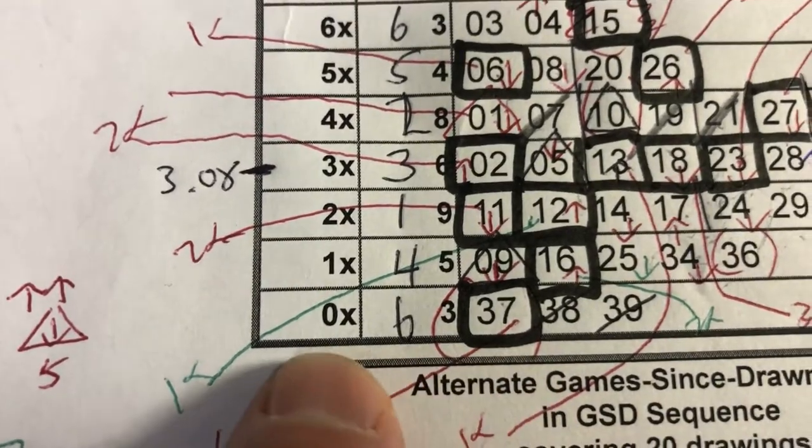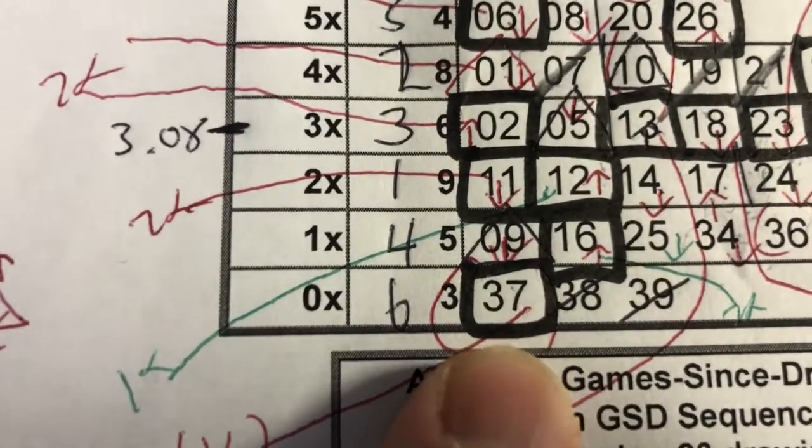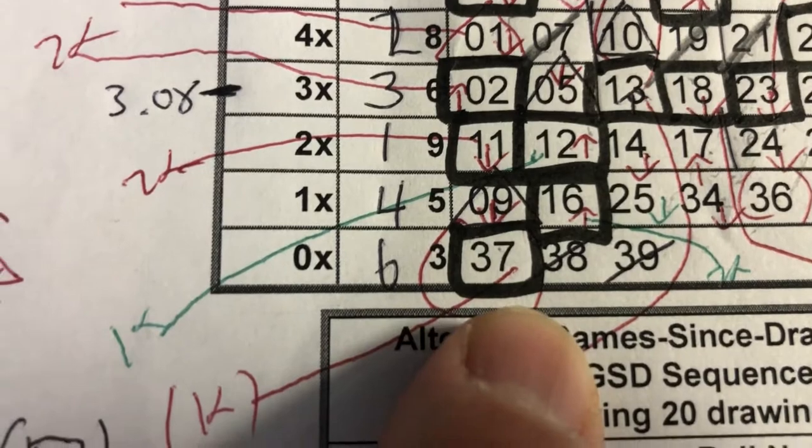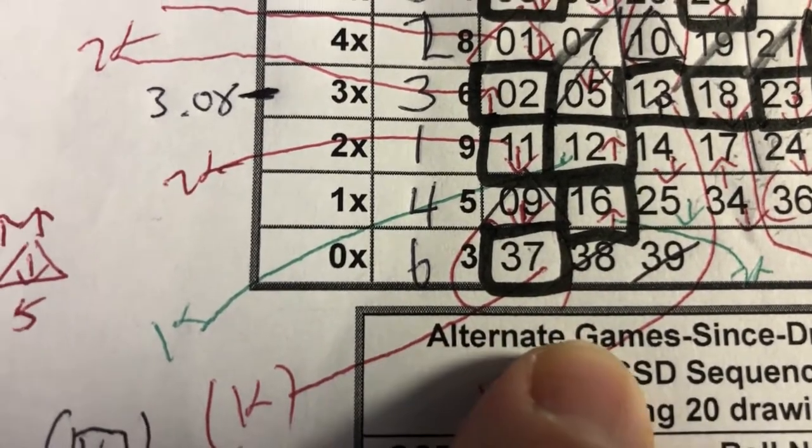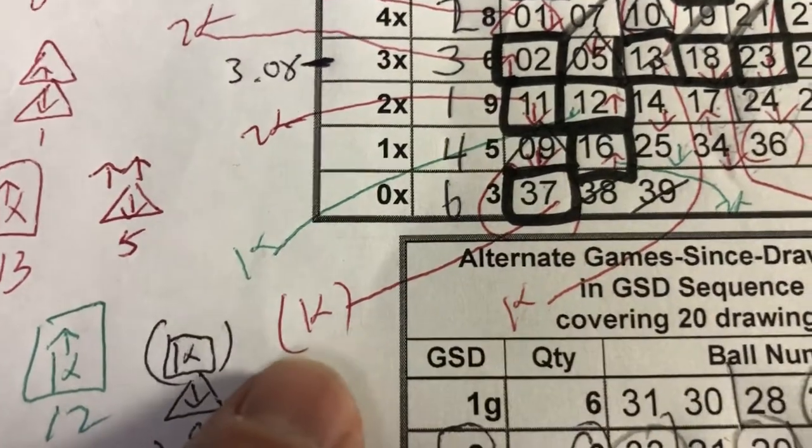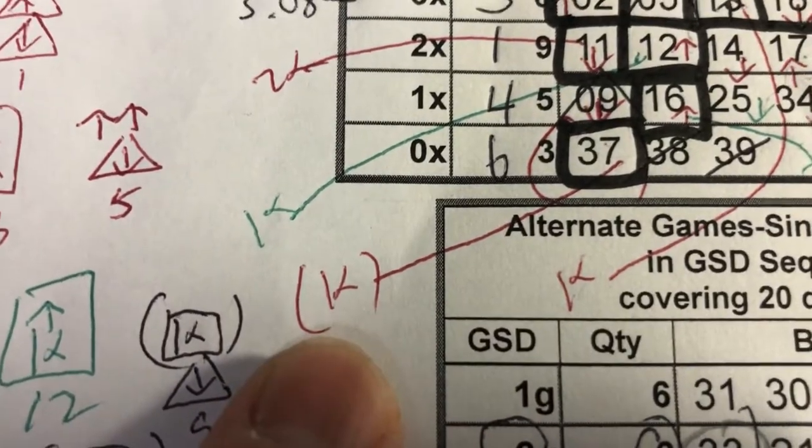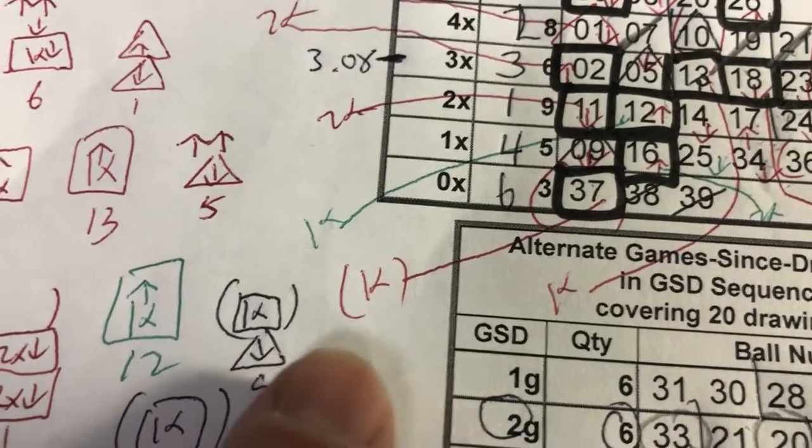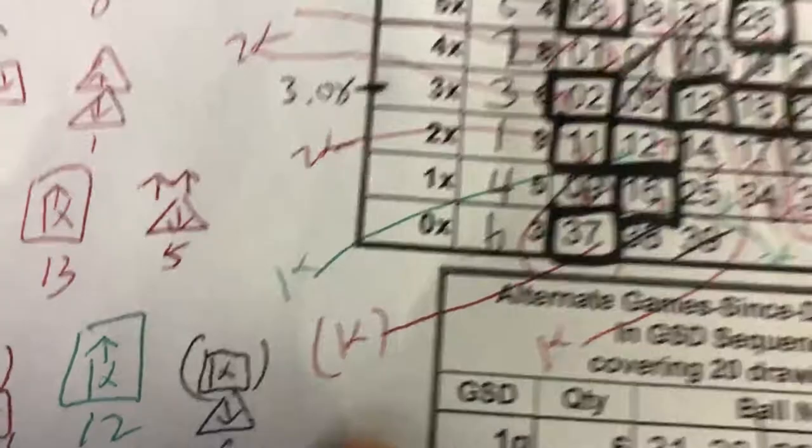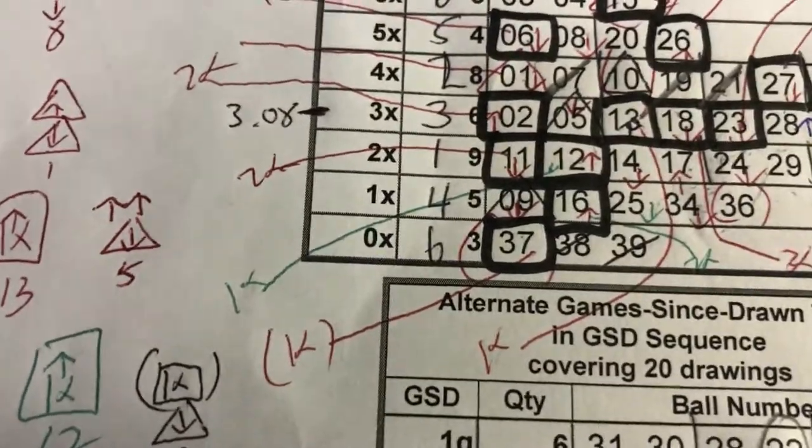in tier 0x, number 37, it has a square and brackets. And I wrote 1x with brackets because it deserves brackets. This is special. Bear with me.